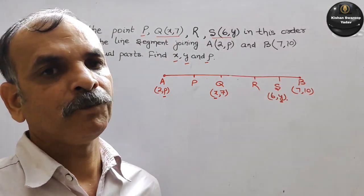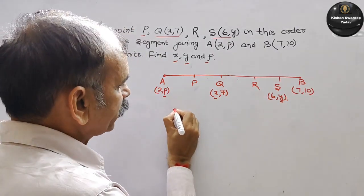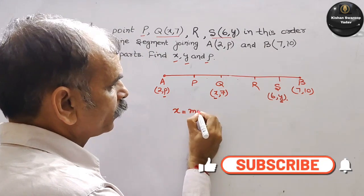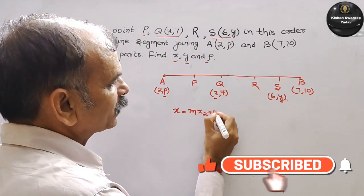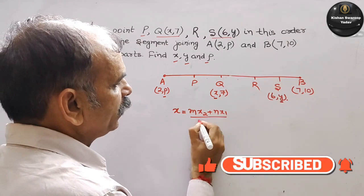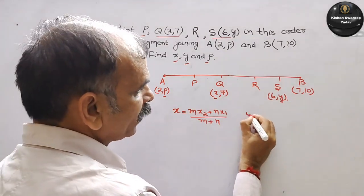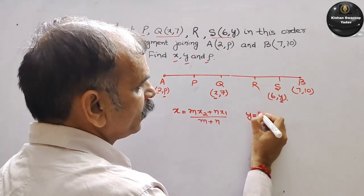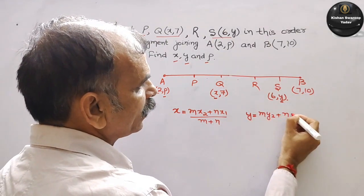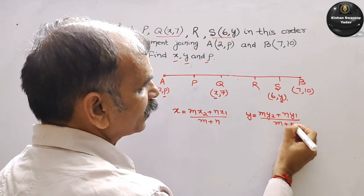Toh by section formula. Pehle hum section formula likhte hain. Section formula hamara hota hai: X = (M·X2 + N·X1) / (M + N), aur Y = (M·Y2 + N·Y1) / (M + N).